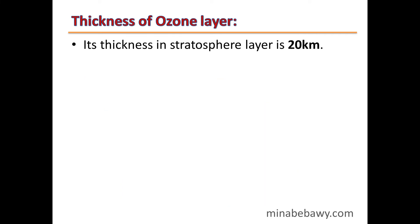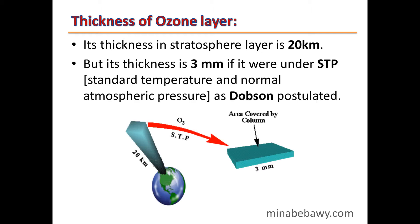What is the thickness of the ozone layer? Its thickness in the stratosphere layer is 20 km, because it extends from 20 to 40 km. But its thickness is only 3 mm if measured under STP — standard temperature and normal atmospheric pressure. The pressure on Earth is about 1000 times stronger than the pressure at the stratosphere, so if the ozone layer is under normal atmospheric pressure, its thickness decreases from 20 km to only 3 mm.